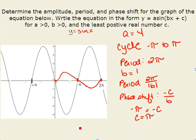In this case, c would have to be equal to π, giving us the equation y equals 4 sine of x plus π as the equation that represents our graph.